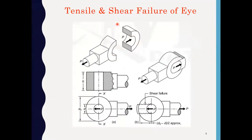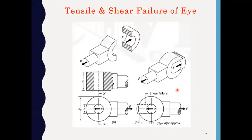Next is tensile or shear failure of the eye. There may be chances of tensile failure and shear failure of the single eye. If the single eye fails in tension, it is called as tensile failure of the single eye, and this is the resisting area to avoid the tensile failure. This is the shear failure of the single eye and this is the resisting area for shear failure.